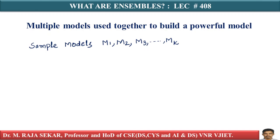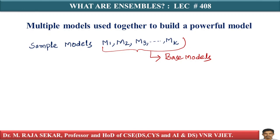Let's assume each of them are your simple models. These are also often referred to as base models — simpler models. You can use any of the existing techniques. You could use techniques like logistic regression, support vector machines, decision trees, k-nearest neighborhood algorithm, any of them. So you have this bunch of models M1, M2, M3, and so on, Mk. And now it tries to combine all the advantages of all these models. We will try to combine these base models into a more powerful model.